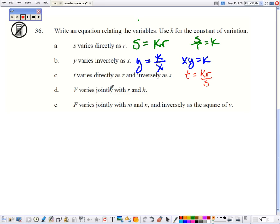For jointly, that's a double direct, so it's k times r times h. And for e, f varies jointly with k and m, and inversely with the square of v.